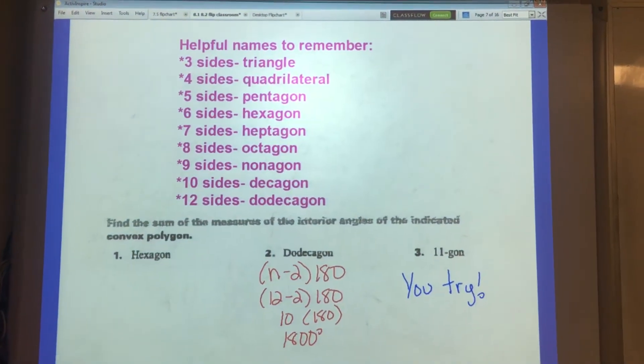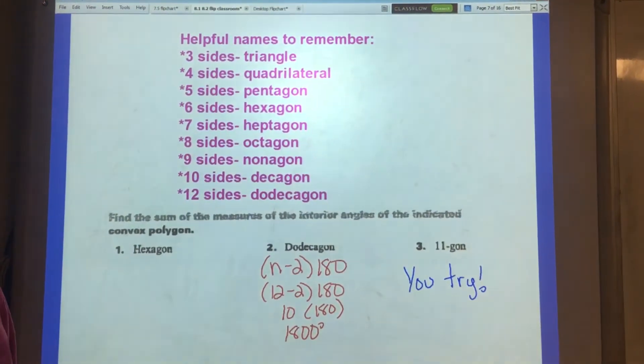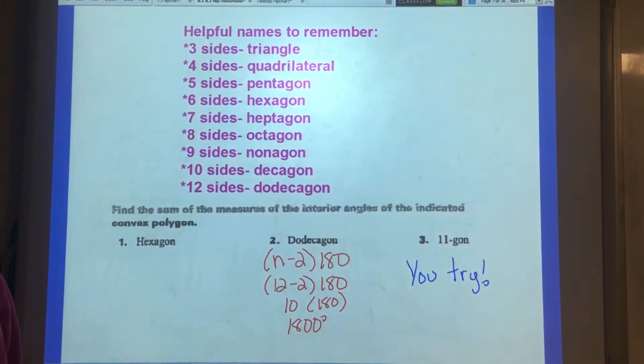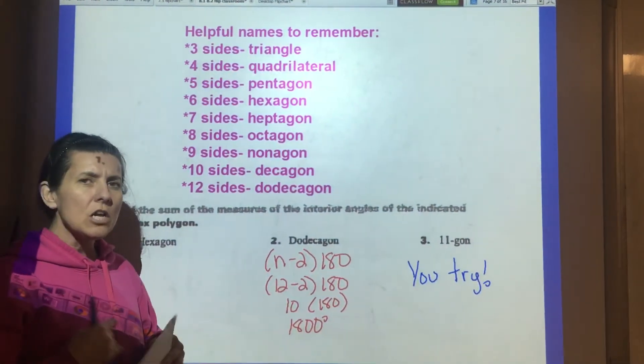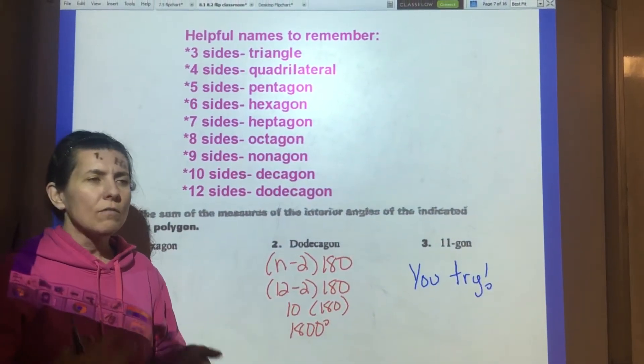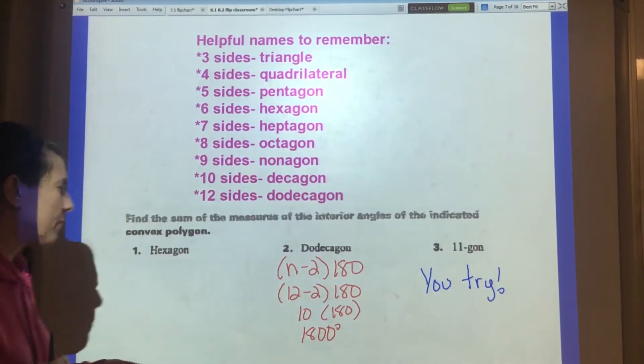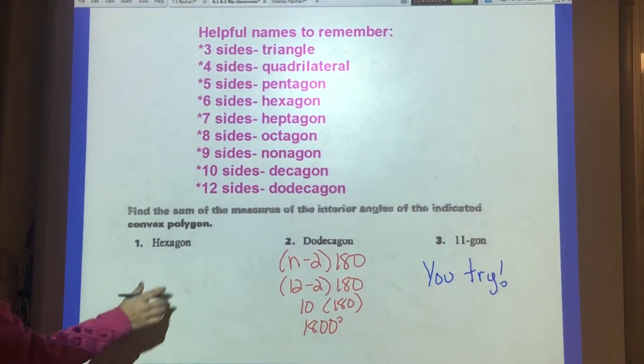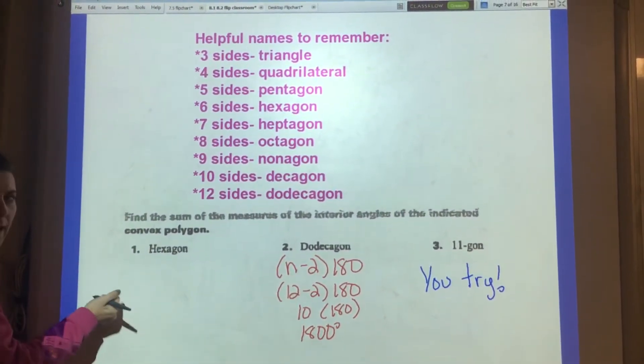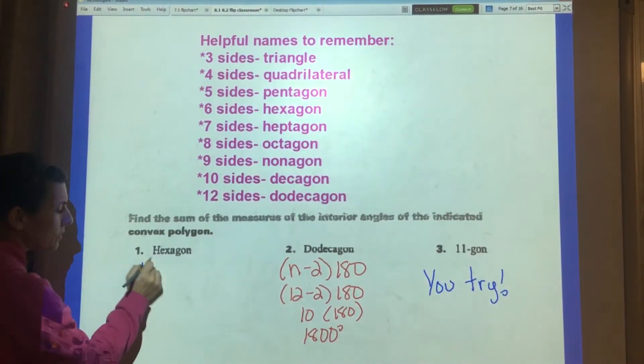The first section says find the sum of the measures of the interior angles of the indicated convex polygon. Convex just basically means that all the angles go inside. They're all less than 180 versus concave would not have that factor. So a hexagon, it has a six-sided figure, six angles and six sides. So we're using this formula.